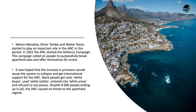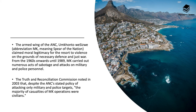Black people got onto white buses, used white toilets, and entered white areas, refusing to use passes. Despite 8,000 people ending up in jail, the ANC caused no threat to the apartheid regime. The armed wing of the ANC, Umkhonto we Sizwe, abbreviated MK meaning 'Spear of the Nation', claimed moral legitimacy for the resort to violence on the grounds of necessary defence and just war. From the 1960s until 1989, MK carried out numerous acts of sabotage and attacks on military police and personnel. The Truth and Reconciliation Commission noted in 2003 that, despite the ANC's stated policy of attacking only military and police targets, the majority of casualties were civilians.